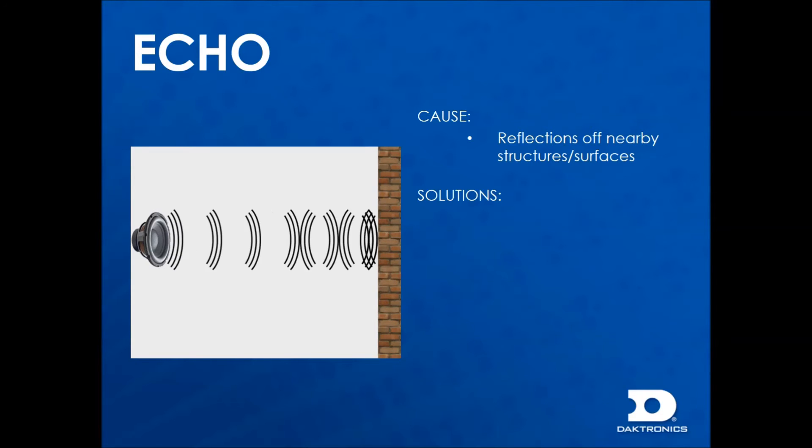To fix echo, there are only a few solutions, none of which are usually easy. One option is to direct the sound so it does not hit those surfaces. Sometimes this can be achieved simply by aiming the speaker in a slightly different direction, but often the speaker itself will need to be relocated. Another option is to install acoustic dampening material, however this can get very expensive.